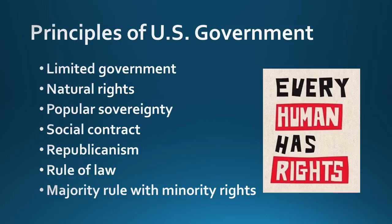It's based on the idea of these three terms: natural rights, popular sovereignty, and social contract. These mean that we have rights that don't come from any government, but rather from something greater than that. We have these naturally — we were born with these rights. People are the source of all governmental power; that's popular sovereignty. The social contract tells us that the government's duty is to protect the rights of the people, because they get their power from the people.